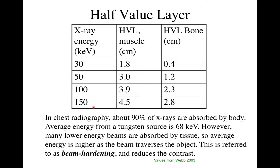Here are actual numbers — this is energy dependent. For muscle and bone at 50–100 keV, which is our clinical imaging range, it's about 3–4 cm half-value layer for muscle and 1–2 cm for bone. So 50% of those photons will be gone in that distance.